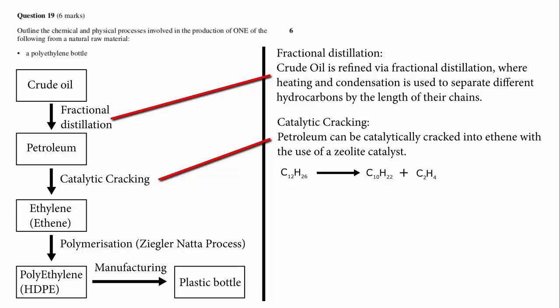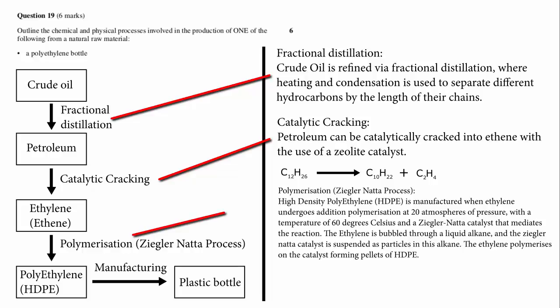The ethene is polymerized to HDPE. We need to give a complete explanation of the HDPE production process, including some physical aspects which are not normally examined. High-density polyethylene (HDPE) is manufactured when ethylene undergoes addition polymerization at 20 atmospheres of pressure, with a temperature of 60 degrees Celsius and a Ziegler-Natta catalyst that mediates the reaction. The ethylene is bubbled through a liquid alkane, and the Ziegler-Natta catalyst is suspended as particles in this alkane. The ethylene polymerizes on the catalyst, forming pellets of HDPE.